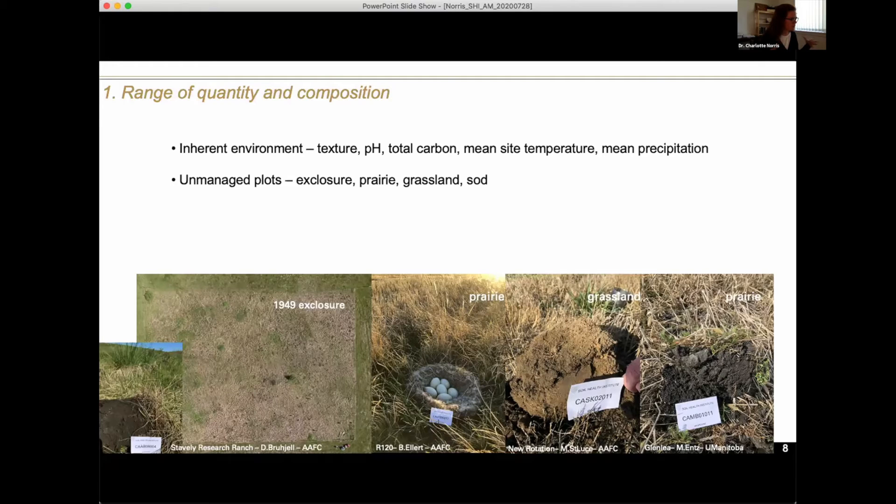You want to get a sense of what the data is telling you and what the range is. We also have landscape and seasonal variation. To take out one of these variables was management first. I did that by just looking at exclosures or prairies, grasslands with continual perennial cover for at least five years.